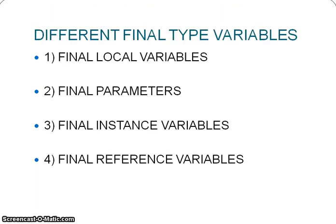There are different types of final variables. As we have different variable types, we can apply the final keyword to all of them. The types are: final local variables, final parameters, final instance variables, and final reference variables. We will see each type in detail with examples in the coming tutorials.